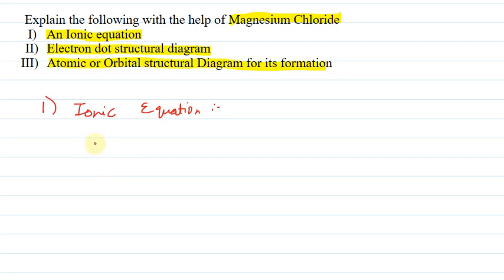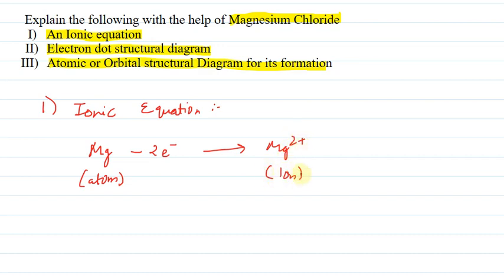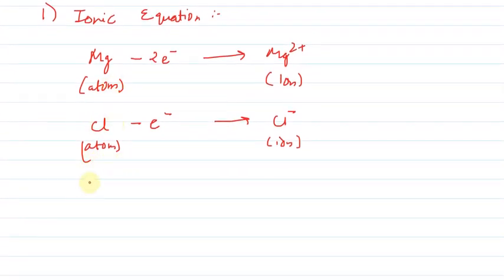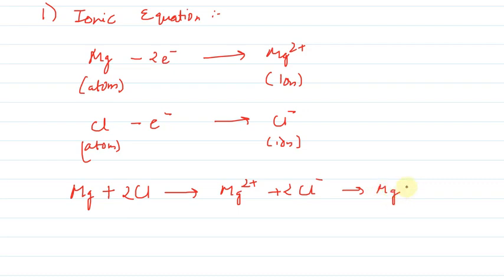For the formation of magnesium chloride, what happens: we take the Mg atom, then we remove 2 electrons from it to form the Mg²⁺ ion. Similarly, we take chlorine and remove one electron from it, so it becomes Cl⁻ — converting it from atom to ion. When we regroup both equations together, it becomes: Mg + 2Cl → Mg²⁺ + 2Cl⁻, and this further forms MgCl2. So this is our ionic equation for the given reaction.